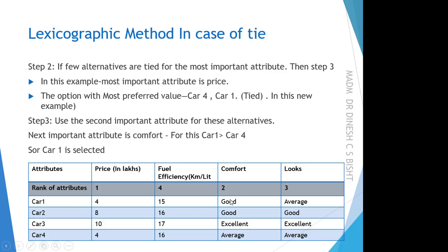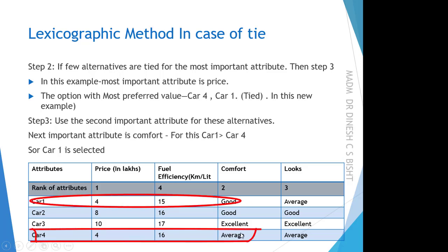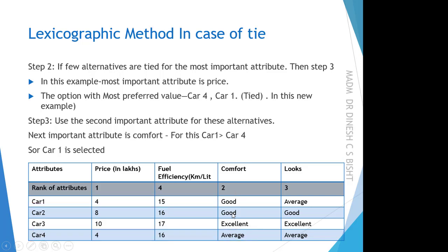Car 1 has a comfort level of 'good' and Car 4 has 'average'. Comparing these two, 'good' is clearly better than 'average', so Car 1 is selected. This is how we work in the lexicographic method. In the next lectures, we will discuss more about elementary methods.